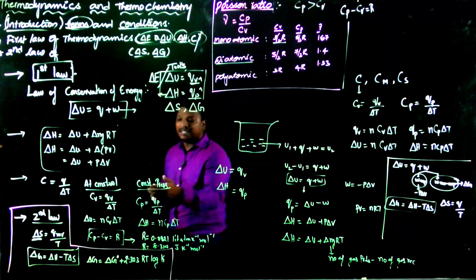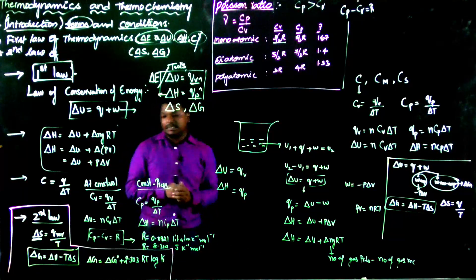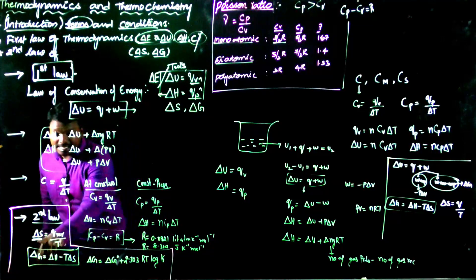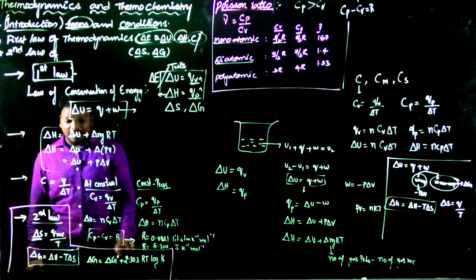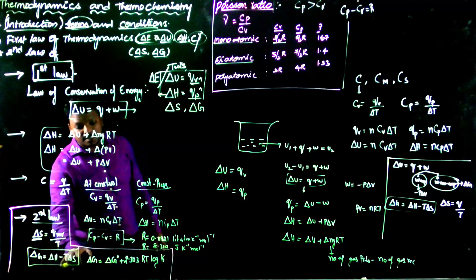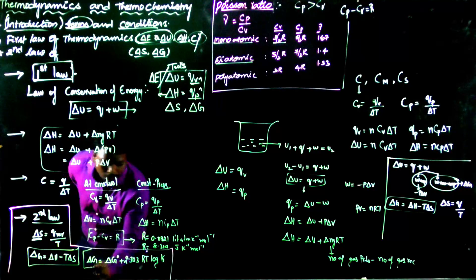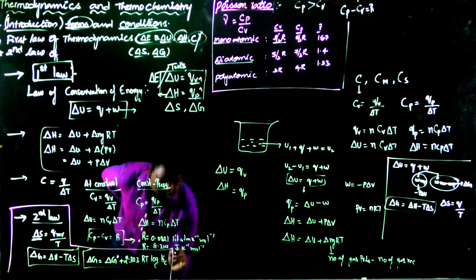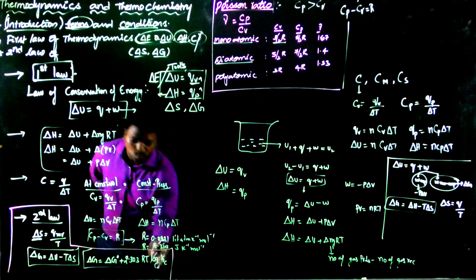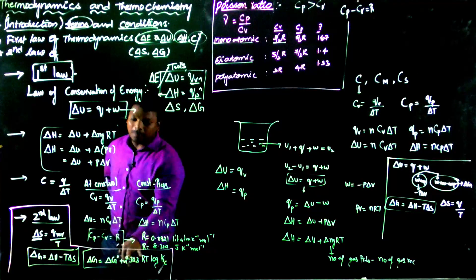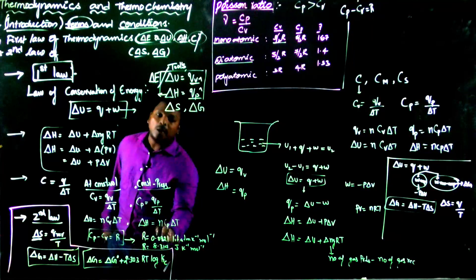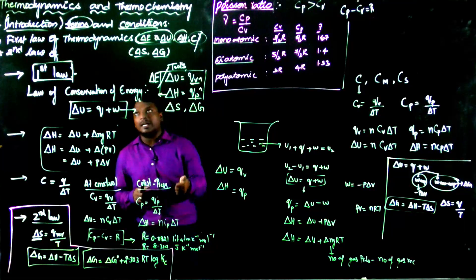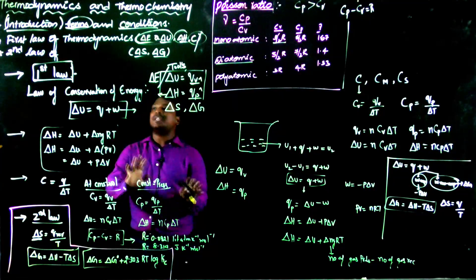The Second Law formulas to remember are: entropy ΔS = q_reversible/T, Gibbs free energy ΔG = ΔH − TΔS, and the formula connecting Gibbs free energy to the equilibrium constant: ΔG = ΔG° + 2.303RT log Kc. These are the key formulas for thermodynamics.